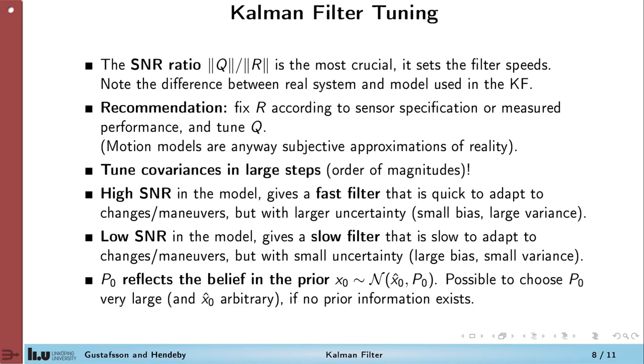On the contrary, tuning the filter to have low Q over R gives a slow filter that doesn't adapt to changes or maneuvers that quickly, but has a small uncertainty. So we get a larger bias and a smaller variance. So this is always the trade-off between filters: large or small bias versus large or small variance.